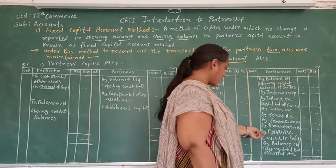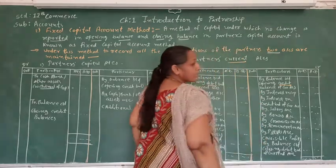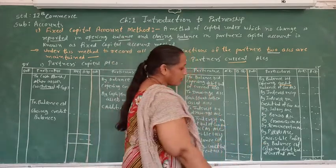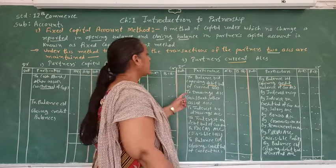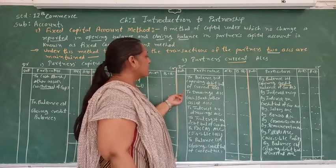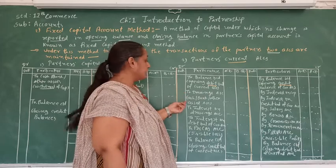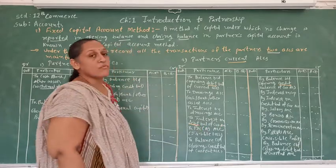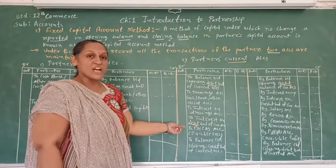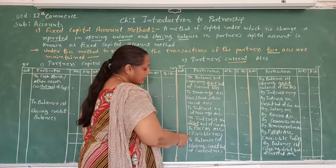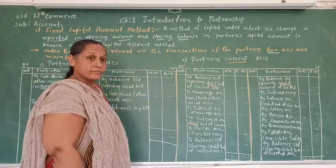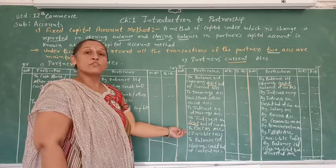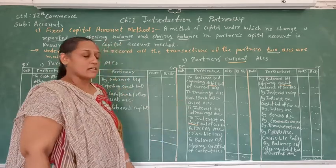Also on the credit side of the current account: salary, bonus, commission, remuneration, and the divisible profit from the profit and loss appropriation account. On the debit side of the partner's current account, we write drawings, then interest on drawings, then interest on the debit balance of the current account charged from the partner, and lastly the divisible loss — that is, whatever loss is there in the business is written on the debit side of the current account.